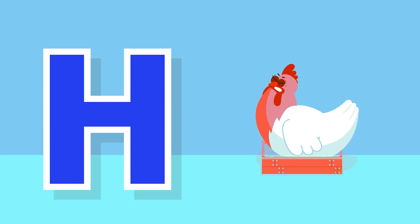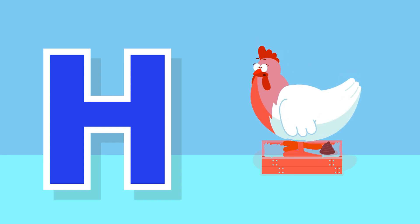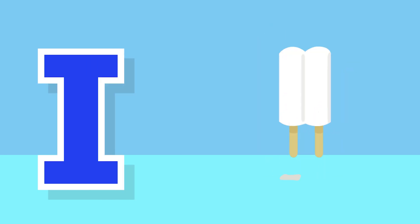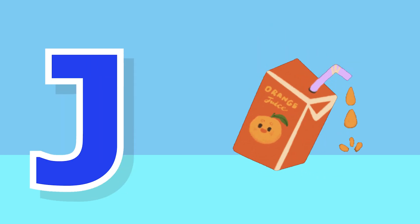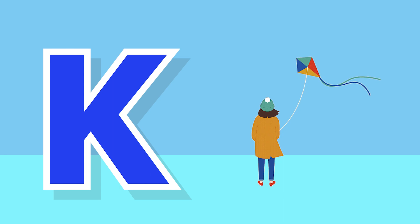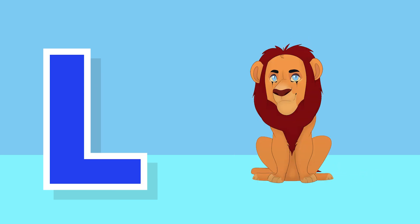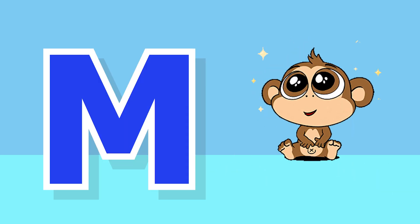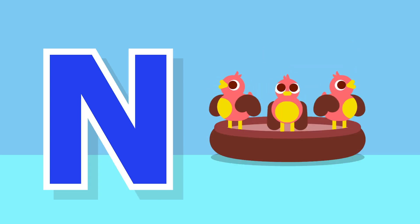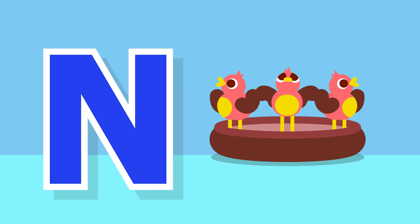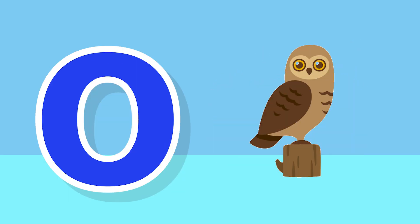H for hen, I for ice cream, J for juice, K for kite, L for loyal, M for monkey, N for nest, O for owl.